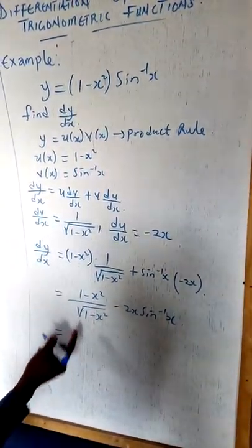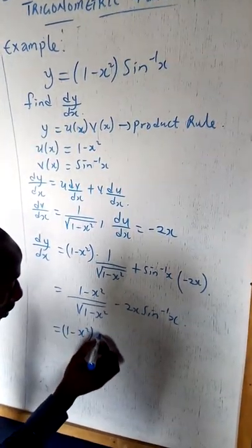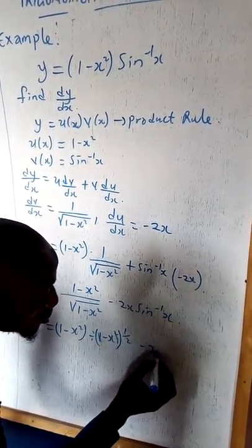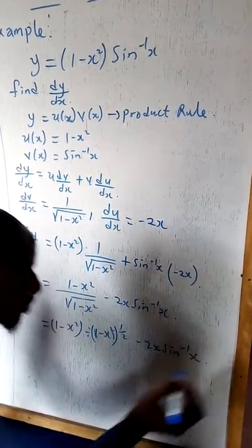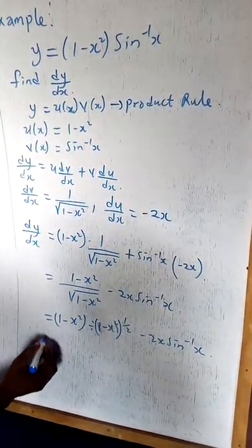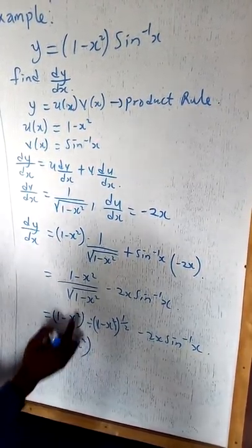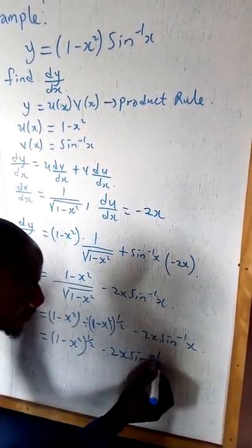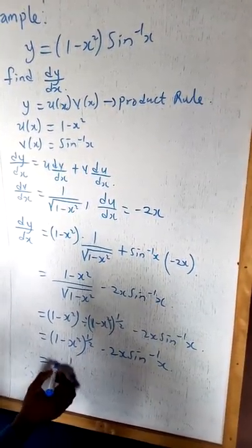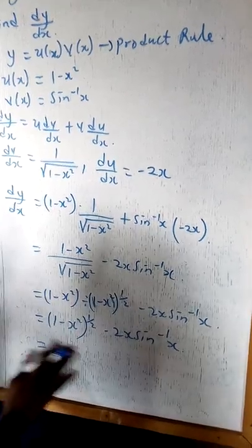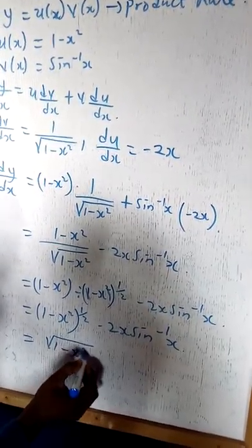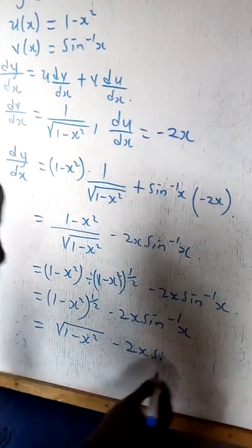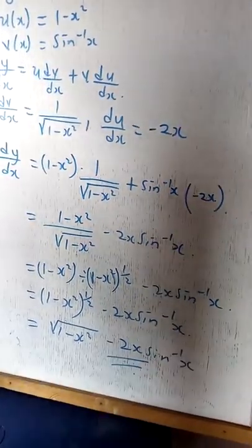Now (1 minus x squared) divided by square root of (1 minus x squared) — that is (1 minus x squared) divided by (1 minus x squared) to the power one half. Applying the rule of indices, the same base gives exponent 1 minus one half, which equals one half. So the final answer is: dy/dx = square root of (1 minus x squared) minus 2x arcsin(x).